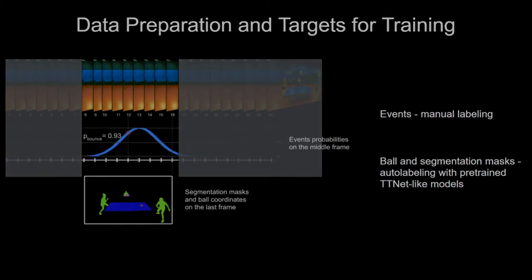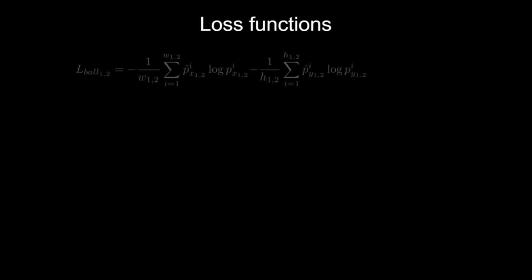The ball detection is trained with a cross-entropy loss function calculated for x and y vectors independently and summed up on both scales. As event spotting is treated as a classification problem, it was trained with a weighted cross-entropy loss function.